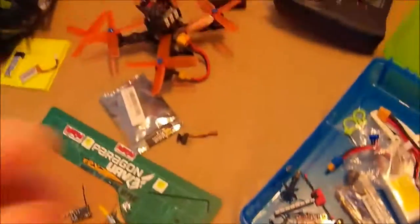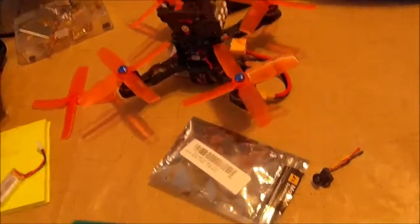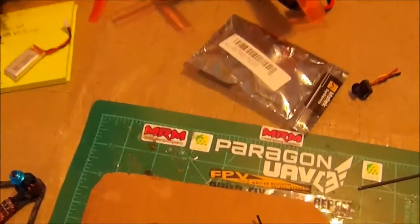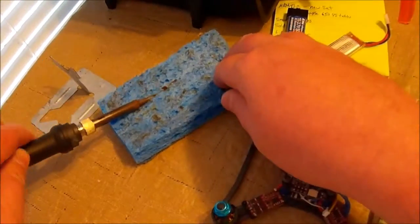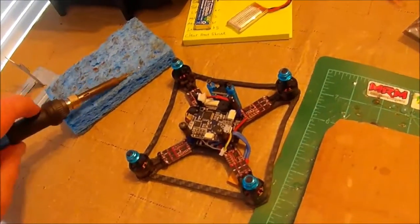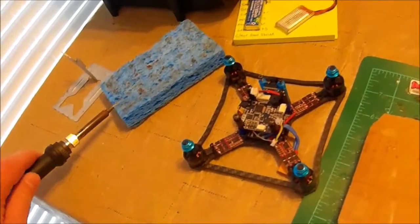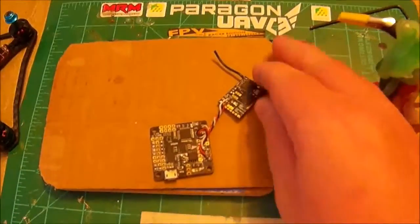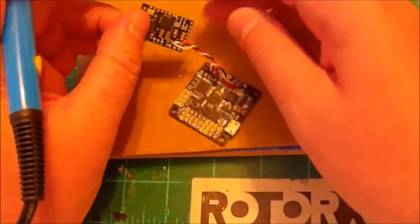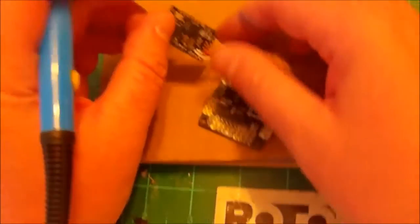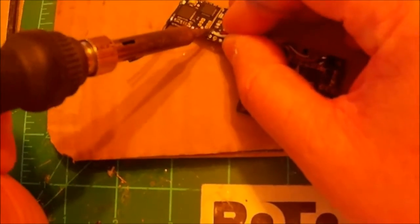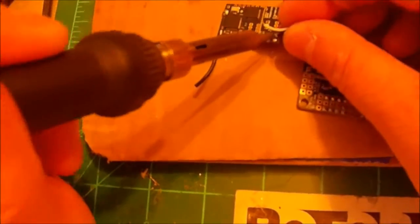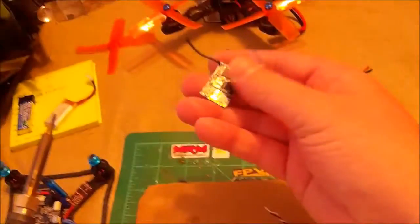Alright, I'm going to attempt to turn a lemon PPM receiver into a satellite receiver. Now this might look a little different than yours because I have taken all the pins off of this, the bind pins and the PPM pins, and just direct soldered because that's how I needed it to fit.